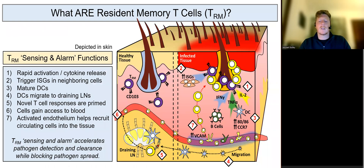Resident memory T-cells, or TRM for short, are a subset of memory T-cells that forego systemic recirculation in exchange for durable residence within barrier non-lymphoid tissues, where they accelerate pathogen detection and clearance.